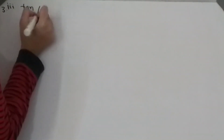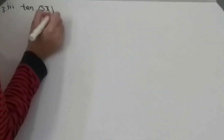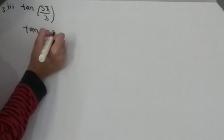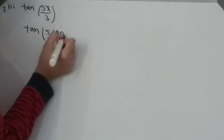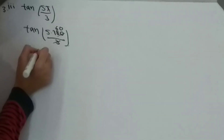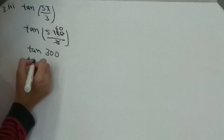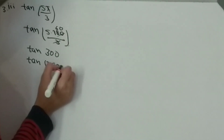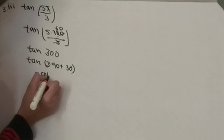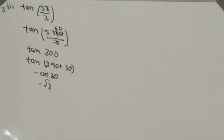Third: tan(5π/3). Doing 5×180°/3 gives 300°. Splitting as 3×90° + 30°, the result is minus cot(30°), which equals minus √3.